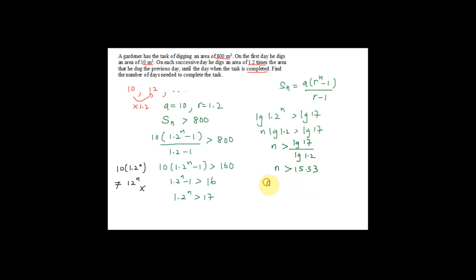n more than 15.53 means n can take the value of 16, 17, 18, and so on, because n should be an integer. So what is the number of days needed to complete the task? We will get the smallest number for n, that is n equal to 16. So this gardener will take 16 days to dig an area of 800 meter square.